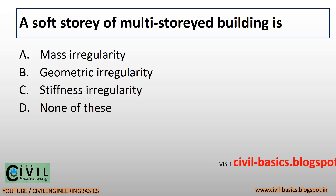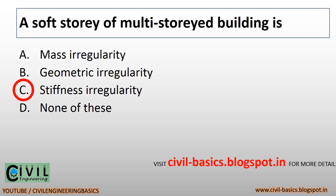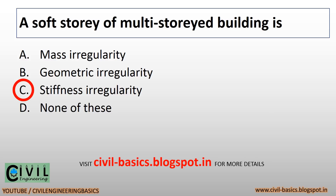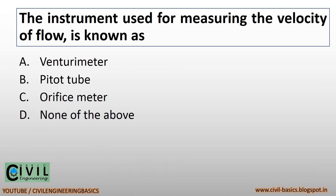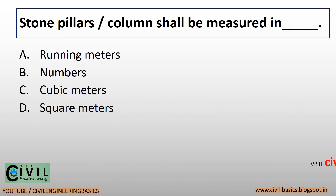A soft story of a multi-storied building is a stiffness irregularity. The instrument used for measuring the velocity of flow is known as a pitot tube. Stone pillars or columns shall be measured in cubic meters.